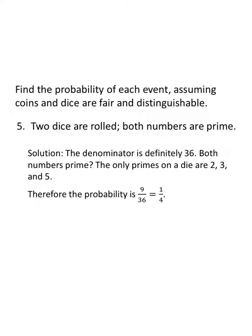If two dice are rolled, both numbers are prime. Denominator is definitely 36, but both numbers are prime. A prime is defined as an integer n greater than one such that only n and one divide the number. Basically, two and then some odd numbers: three, five, seven, 11, 13, 17, and so on. But we're looking at dice. Two, three, and five are the only prime numbers on a die. One is not a prime number.